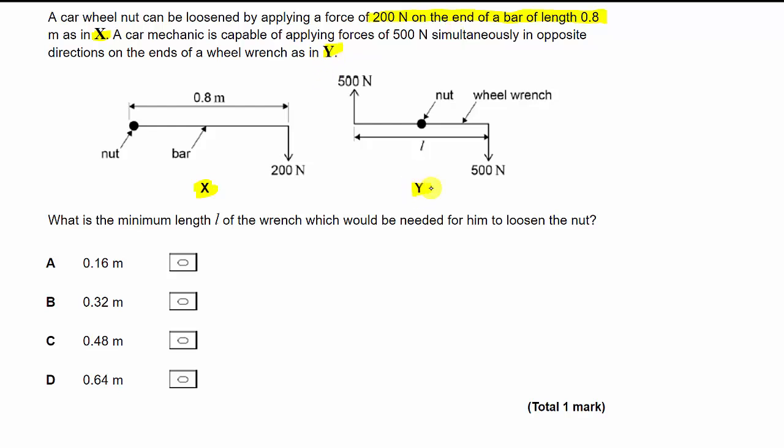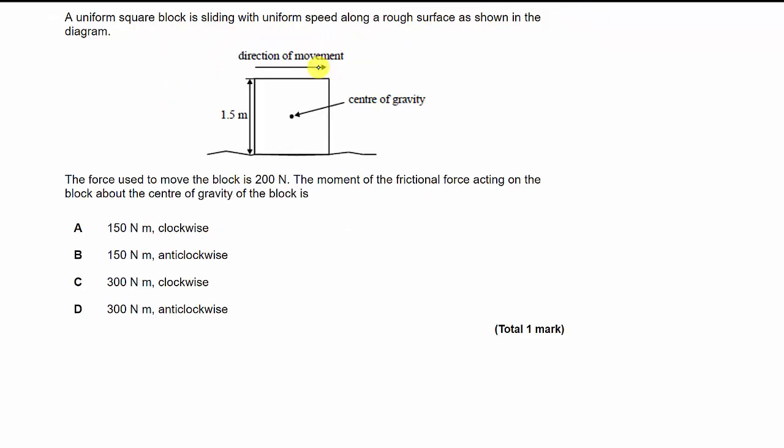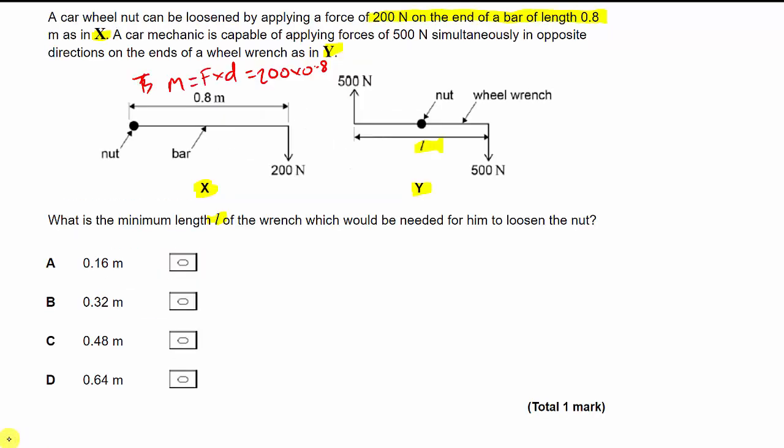What is the minimum length L which would be needed for him to loosen the nut? So what we're being told is this will loosen the nut. It's just enough to do it. So the torque is going to be force times distance. So just for this one, the torque being provided here, or the moment being provided here, is just F times D. So it's 200 times 0.8, which comes out as 160 Newton meters.